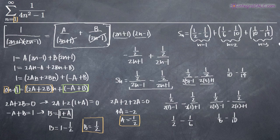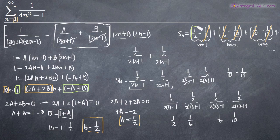Now we can see what the series looks like. As we go out toward infinity, we get an interesting pattern: negative 1 sixth and positive 1 sixth cancel, negative 1 tenth and positive 1 tenth cancel. The term for n equals 4 would give positive 1 fourteenth, which cancels with the next term, and so on. All terms cancel into infinity, leaving only the very first part of our first term: 1 half. Therefore the sum of the series S sub n equals 1 half.